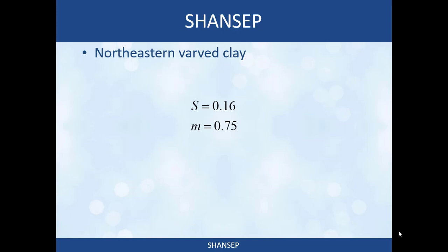Ladd also tested northeastern varved clay. Varved clays form when flood events carry fine-grained sediments that settle in thin layers — each varve has coarser, siltier particles at the bottom becoming progressively finer toward the top, then another varve begins. Varved clays can actually carry a record of past rainfall events. For northeastern varved clays, Ladd found a normally consolidated strength ratio of 0.16 and an M value of 0.75, again for direct simple shear stress paths.